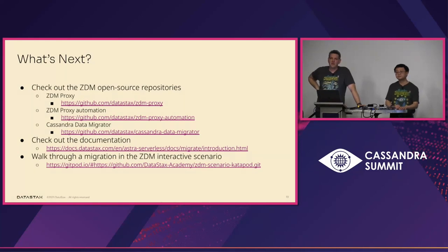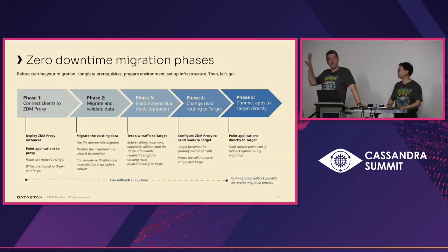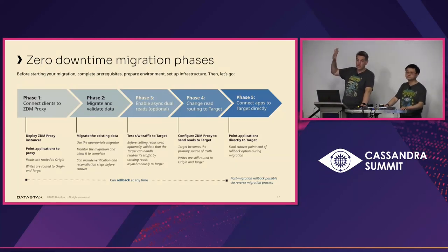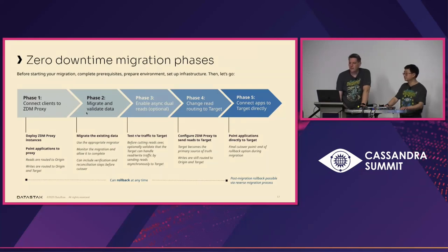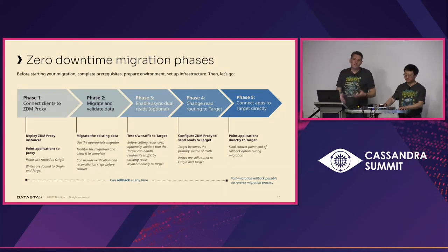A follow-up question: do the dual writes start after the historical migration has completed, or at the same time? You can actually start your historical data migration at any time, even before you set up the proxy, since it takes a while. You don't have to follow these phases strictly — you can migrate data ahead of time, then use the Cassandra data migrator to validate and migrate just the time window you haven't already covered. This reduces the time you need the proxy in place — you could have the proxy active for as little as a day or two after doing the bulk of migration work beforehand.